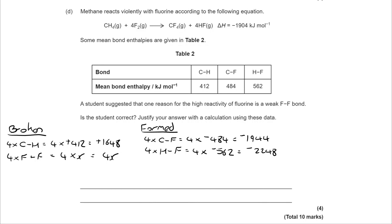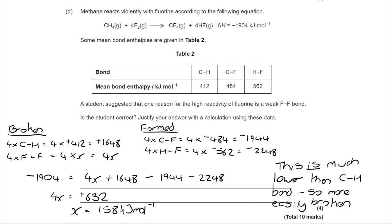When you take all of those figures and we rearrange, you can see that 4X is 632, and that means that X is 158. So we've got the calculation—that's three of the marks.